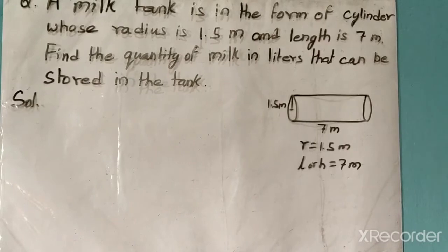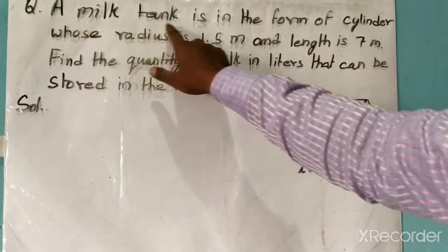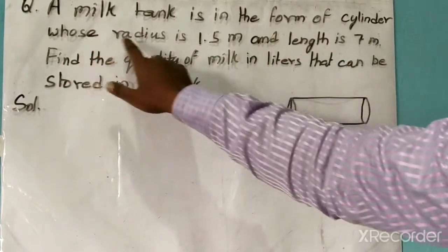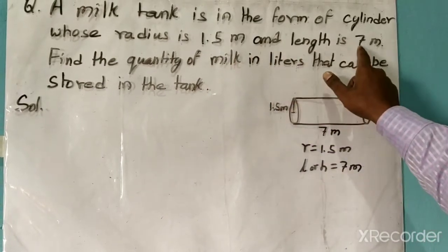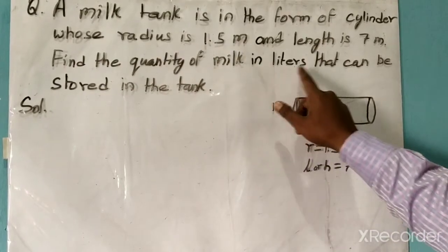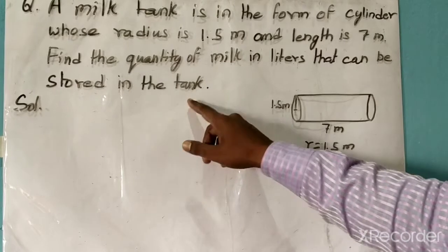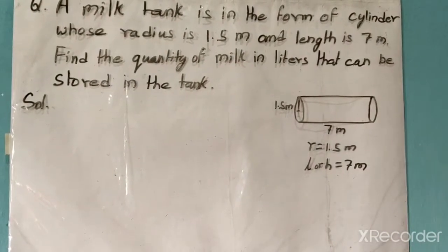Today's question is: a milk tank is in the form of a cylinder whose radius is 1.5 meters and length is 7 meters. Find the quantity of milk in liters that can be stored in the tank. Please watch the video till the end so that the concept will be clear.